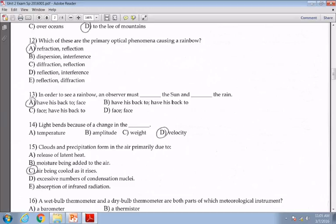For thirteen, again with the rainbow, the observer should have his back to the sun and face the rain that's creating the rainbows. A is the best answer for thirteen. Question fourteen, I was after velocity as changing when light is refracted or bends. Question fifteen, clouds and precipitation form primarily due to C for fifteen, the air being cooled as it rises.